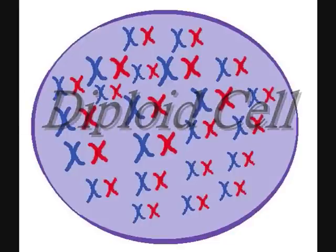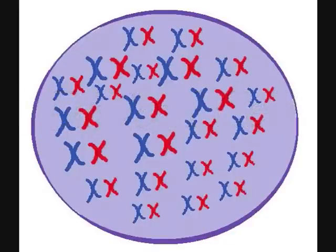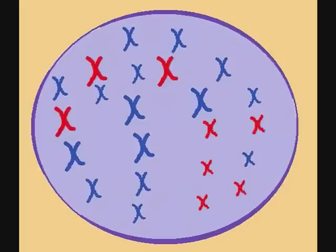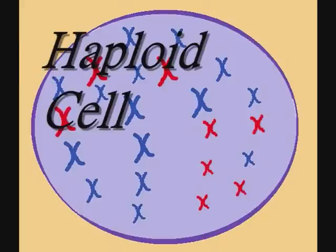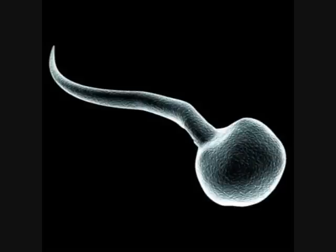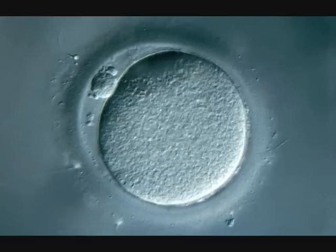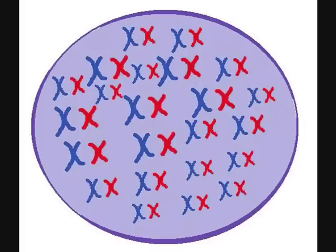Before explaining the steps, understand that most human cells are diploid cells, which means that they have 46 chromosomes. Half of these chromosomes came from the father, and the other half from the mother. If a cell has half the number of chromosomes it is supposed to have — in this case 23 — then it is called a haploid cell. A sperm and egg cell are both haploid cells, and when they meet, they form a diploid cell. Now back to meiosis.